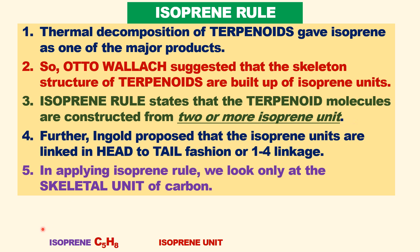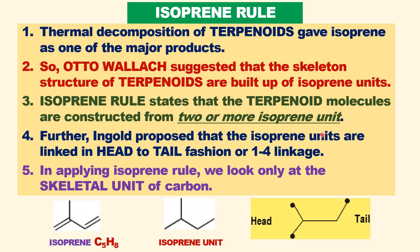Further, Ingold proposed how the isoprene units in terpenoids are linked. Ingold proposed that isoprene units are linked in a head-to-tail fashion, also called a 1,4-linkage — that is, head-to-tail fashion.